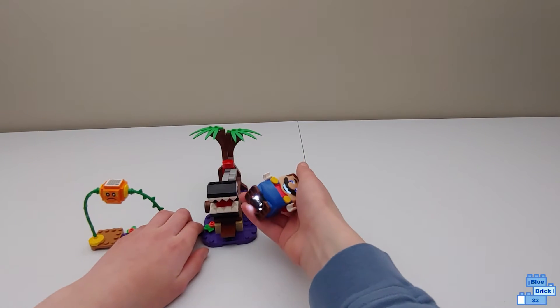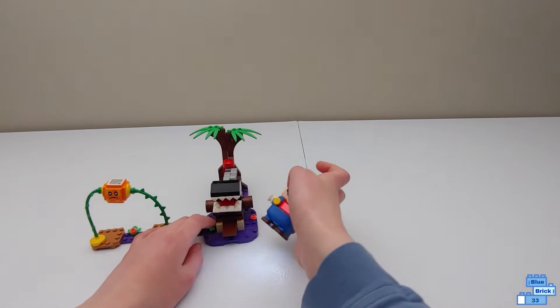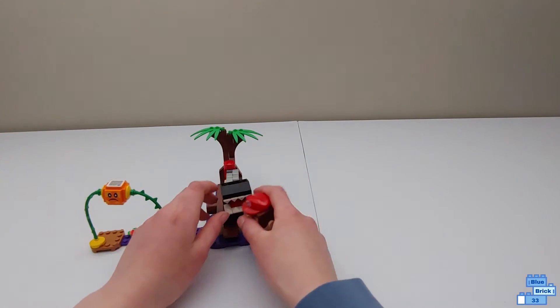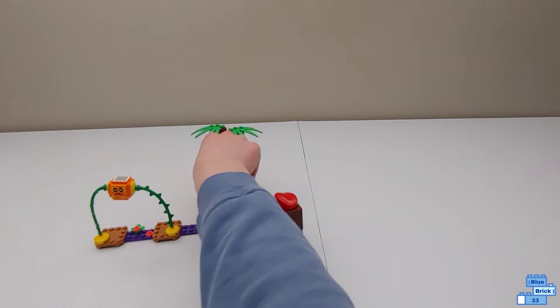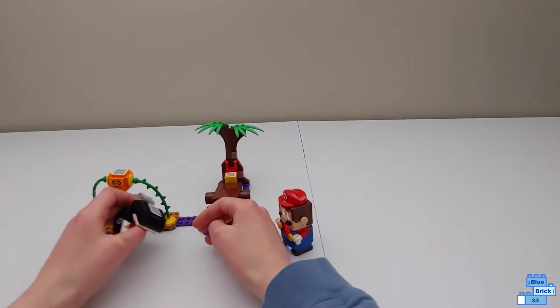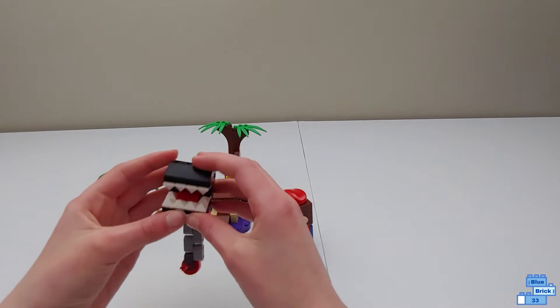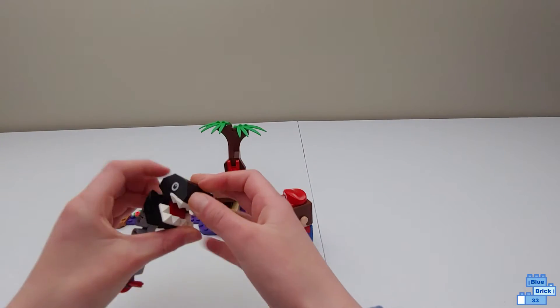Then you go over here, the main part of the set, that's why it's called the Chain Chomp Jungle Encounter, is the Chain Chomp. Now this Chain Chomp, it does have a barcode and I'll show that in a little bit. On its bottom, it can open up and it has some sharp spikes here to look like sharp teeth.